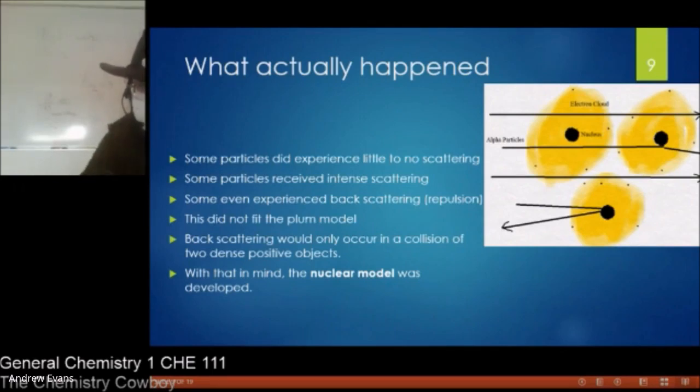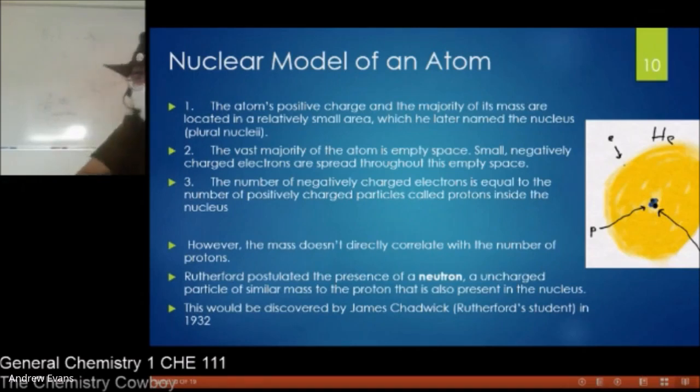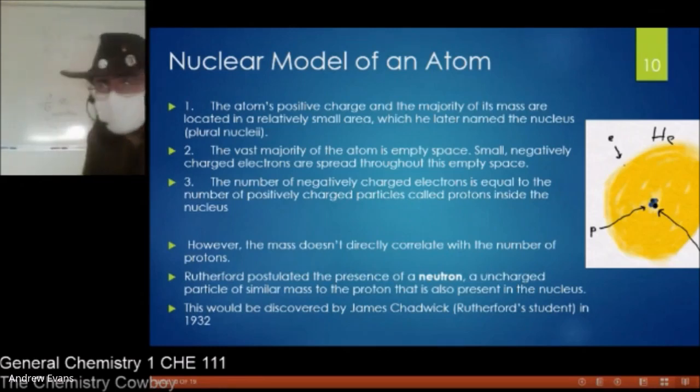So we have some backscattering, and so we realized, oh, that model doesn't quite fit. We had to develop a new model to explain this, and that's where we get our basic nuclear model. So we know there's protons in the center, there's electrons somewhere in the cloud, but it's mostly empty space. As I said, the positive charge and the majority of the mass are in the small area, which is the nucleus. The plural of nucleus is nuclei. The vast majority of the atom is empty space. We have small negatively charged electrons spread throughout. And a number of negatively charged electrons is equal to the number of positively charged protons. That's the basic model. It's not complete, not perfect, but it's what we had at the time.